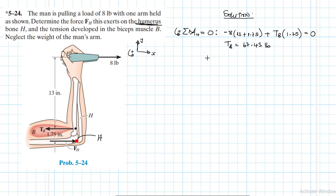So we have TB, let's find what FH is. So it's summation of forces in the x direction. Summation of forces in the x direction equal to zero. This being our reference in that direction, so we have minus TB plus 8 plus FH, equal to zero.